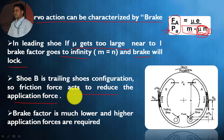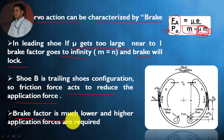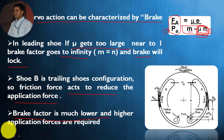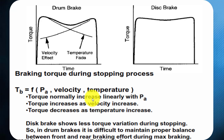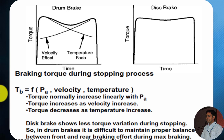Shoe B is a trailing shoe configuration, so the friction force acts to reduce the application force — as we already discussed when talking about leading and trailing shoes. The brake factor is much lower for the trailing shoe and higher application forces are required in case of a trailing shoe.